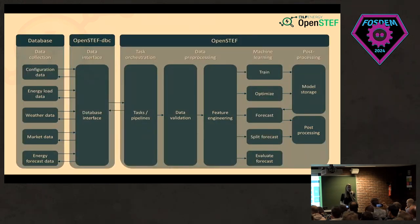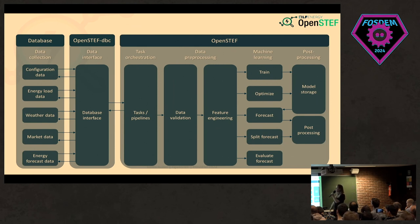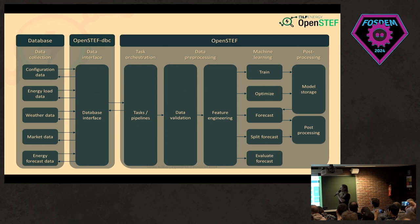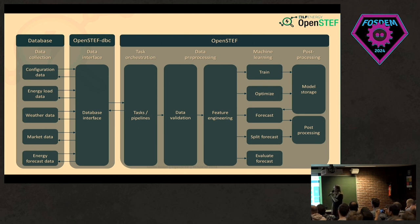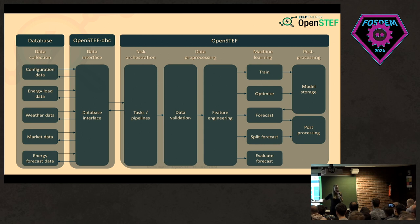What does the software look like? First, you need a database — this is one you have to make yourself, but we do have OpenSTEP DBC, the OpenSTEP Database Connector, which is able to get all your data from your database. Then we get into OpenSTEP with pipelines as part of the task orchestration. We also have data preprocessing, which includes data validation — for example, if we see a lot of flatliners, we're able to remove those from your input data.